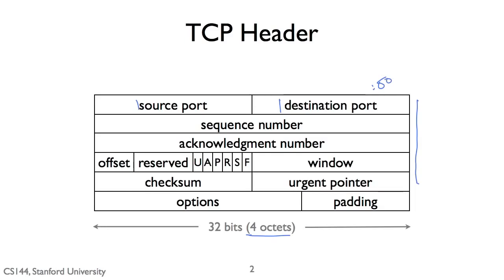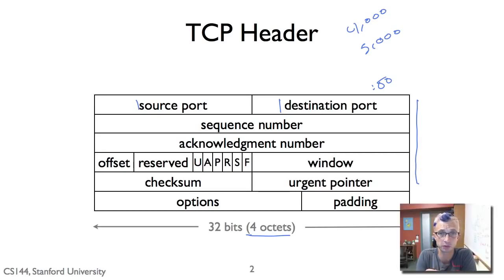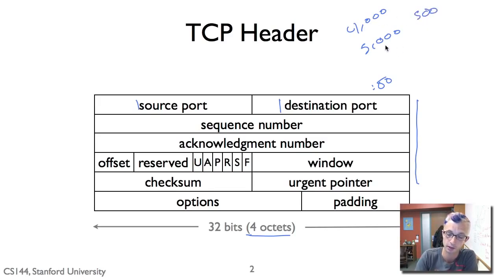The next two fields are the TCP sequence numbers. These denote from the source of this packet to its destination what the sequence number of the data contained in this segment is, as well as what the acknowledgement number from that endpoint is. For example, if this is sequence number 4000, I will send sequence number 4000. The sequence number denotes what the sequence number is of the first byte of the data region which follows the segment header. So if I had a sequence number of 4000 and there were 500 bytes of data, this would mean bytes 4000 to 4499.